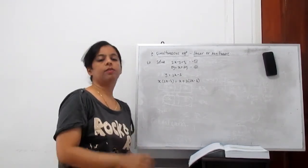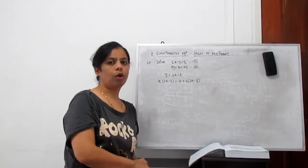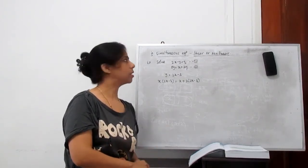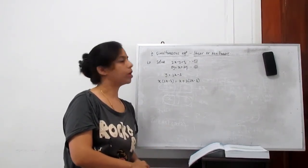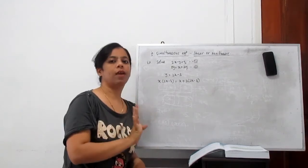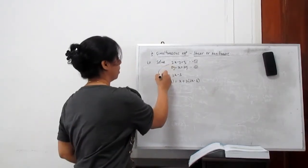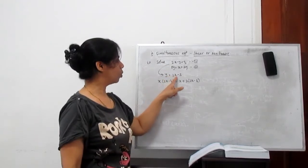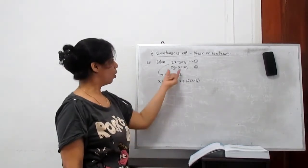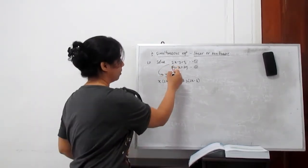From the linear equation, you can find the value of x or y, anything. It's not necessary. From another equation, you can find the value of any one variable, either x or y. I used equation 1 to find the value of y is 2x minus 3.